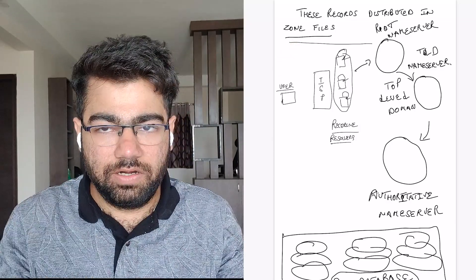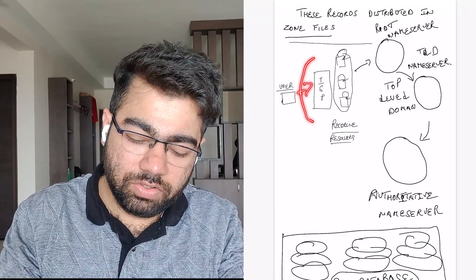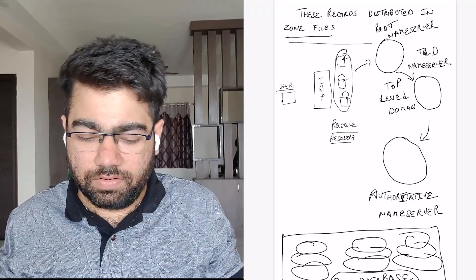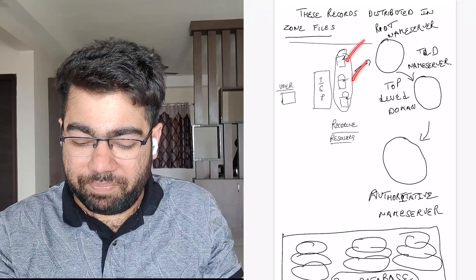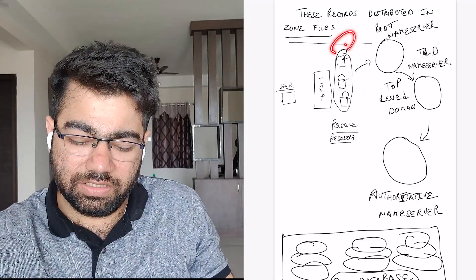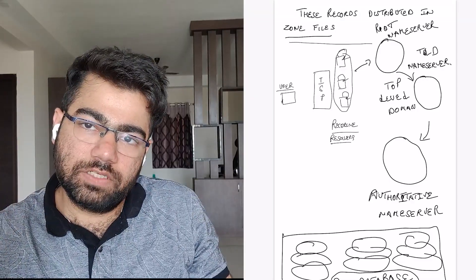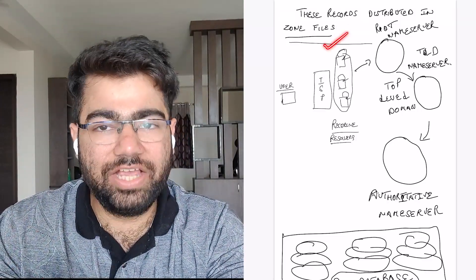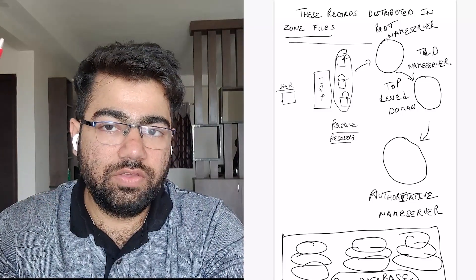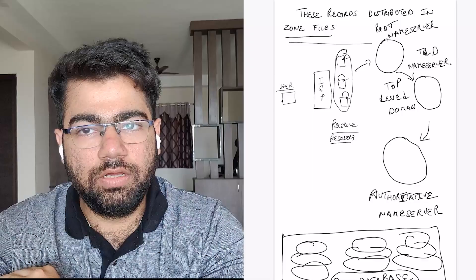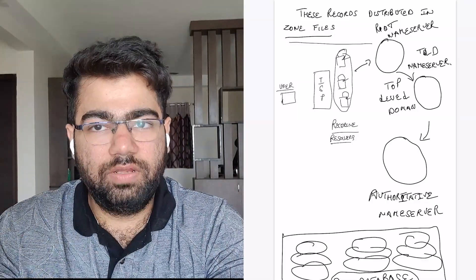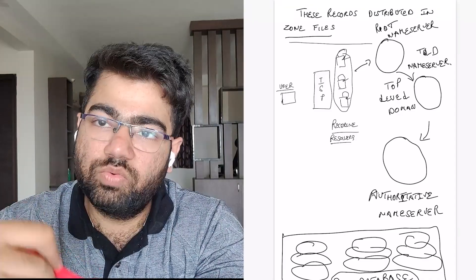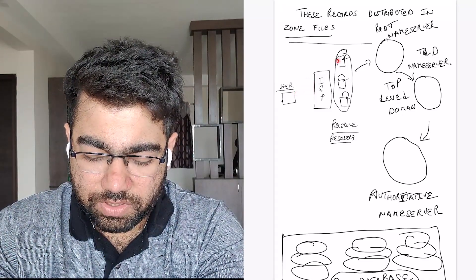Now let's see what happens when a user types a website in the address bar. It will make a call to your ISP — your Internet Service Provider. These ISPs have some mappings already cached in their servers; these are called recursive resolvers. These resolvers contain cached mappings between domains and IP addresses. For frequently visited websites they mostly already have a cached copy of that IP address, which is why popular websites load quite fast compared to less visited ones.